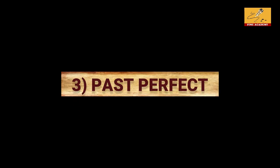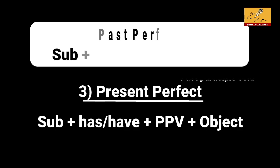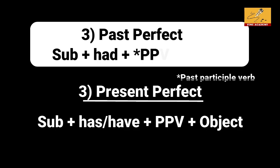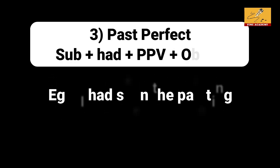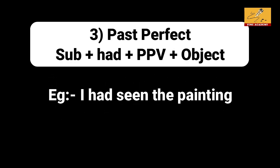Next is past perfect. In present perfect we use has/have, but in past perfect we use 'had'. Structure: subject plus had plus past participle verb plus object. For example: 'I had seen the painting.' Here 'I' is the subject, 'had' is the auxiliary, 'seen' is the past participle verb, and 'the painting' is the object.